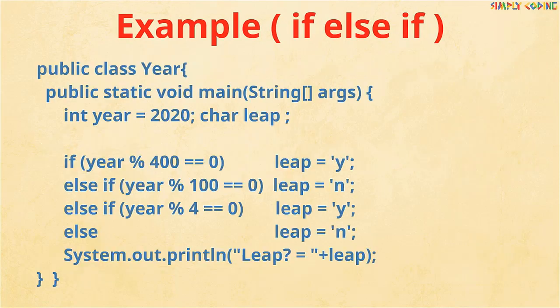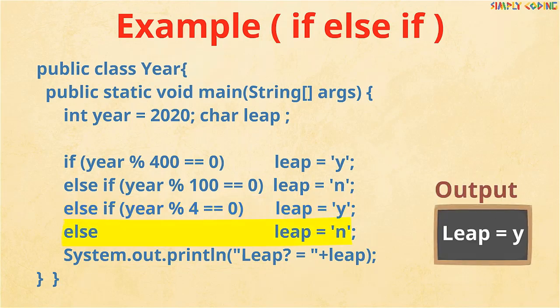We will write an if statement using the modulus operator to divide by 400 and check if there is any remainder — if the year is divisible by 400 then it is a leap year. Else if the year is divisible by 100 then it is not a leap year. Else if the year is divisible by 4 then it is a leap year. In all other cases it is not a leap year. This completes our program.